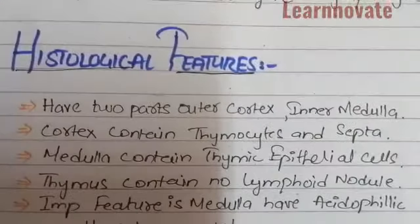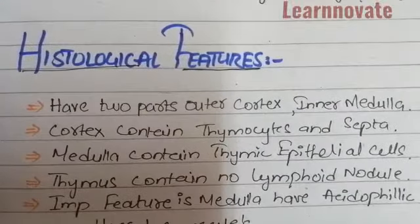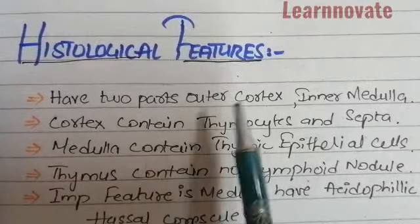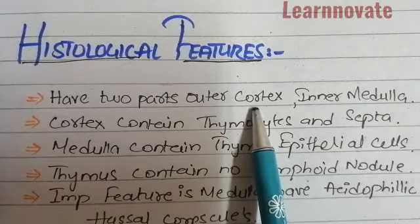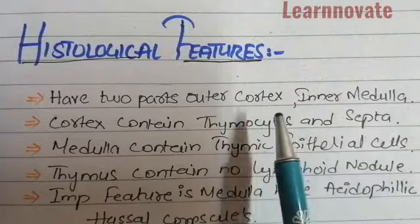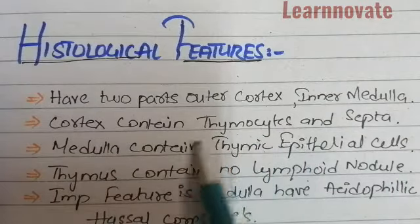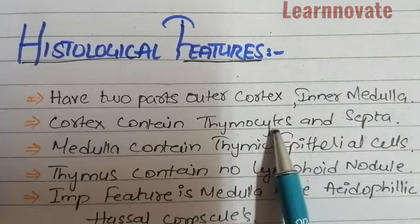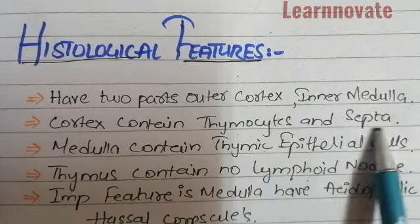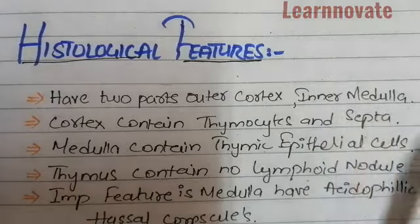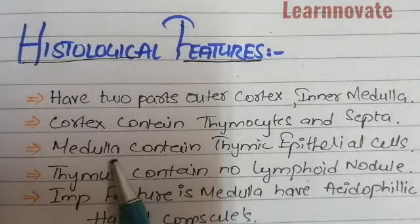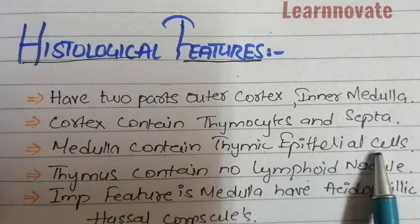Coming to the histological features of the thymus: it has two parts — the outer cortex, which is darker, and the inner medulla, which is lighter. The cortex contains the thymocytes, and septa divide the cortex into lobules. The medulla, which is the lighter-staining inner region, contains the thymic epithelial cells or TECs.